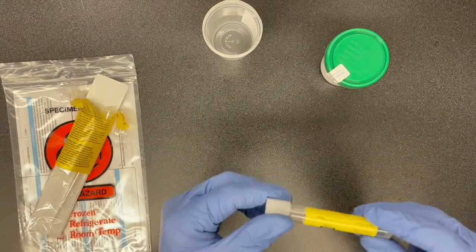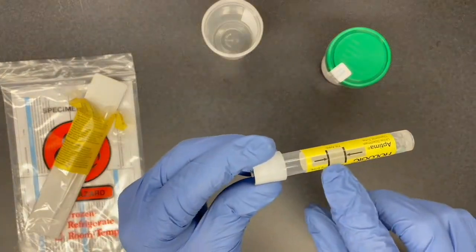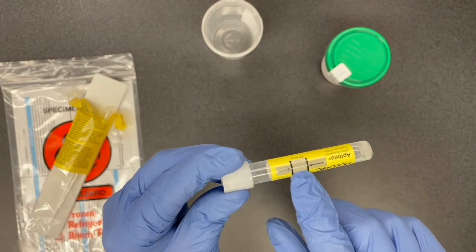So on this tube, you're going to notice there's two black lines here. Later, this is going to be the goal for the amount to be filled.